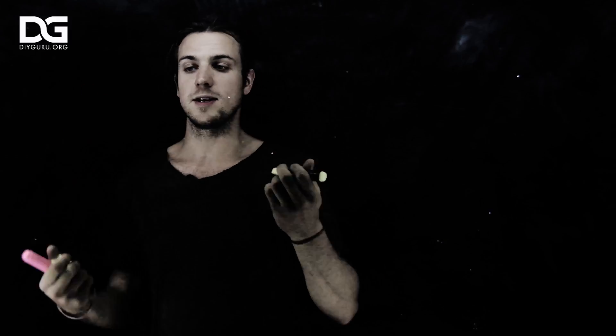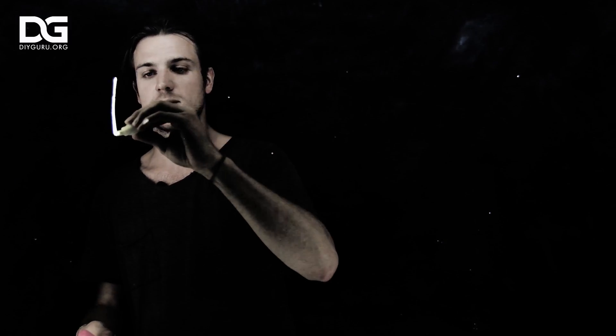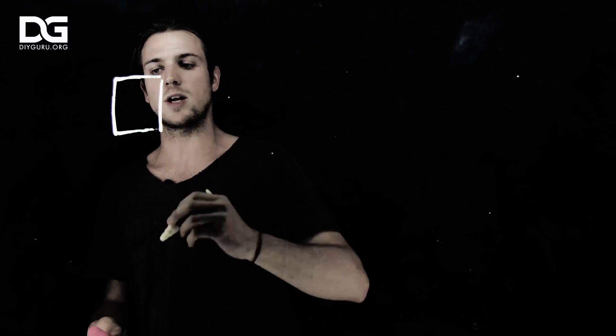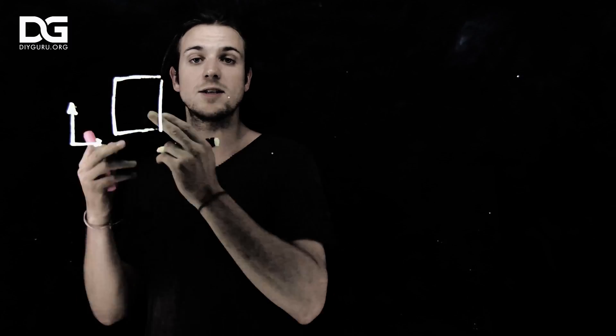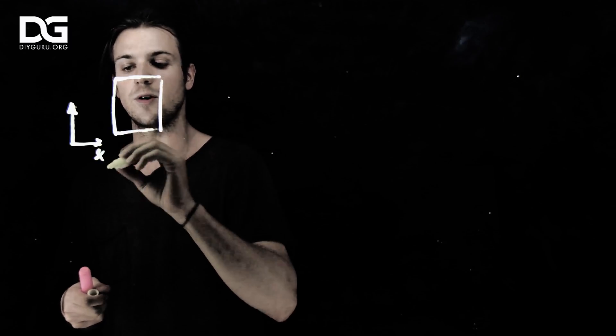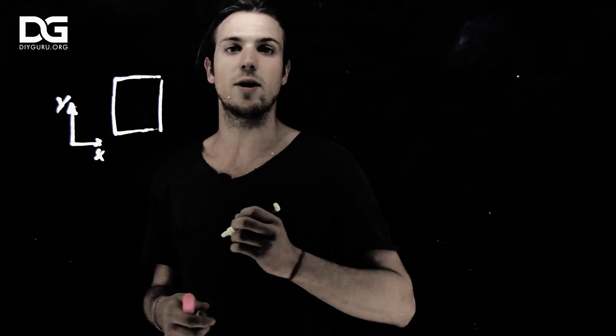When we are in a plane, let's say like this blackboard, and I represent an object in two dimensions, like a square, I need to reference it. This is a frame of reference, very often with two axes named X and Y.